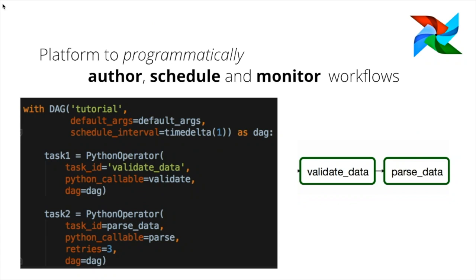Airflow is a workflow orchestrator. It helps to schedule and monitor your workflows using code. Here we have a sample DAG — a directed acyclic graph — which is one of the most important concepts of Airflow. You can see Python operators, and that equals the variable 'task'. There's a Python operator called 'validate data' and another called 'parsing data'. In Airflow you can write these workflows as code, making them very readable and easy to monitor.